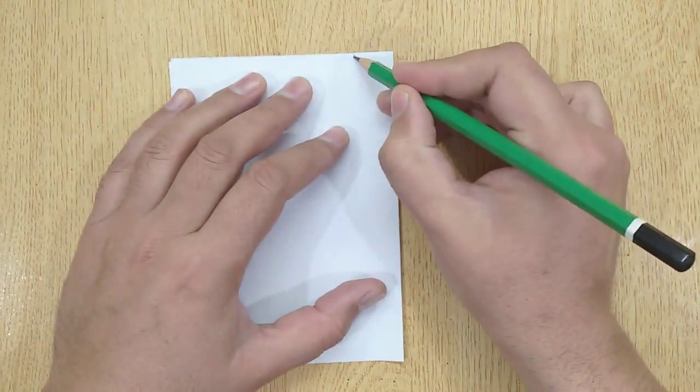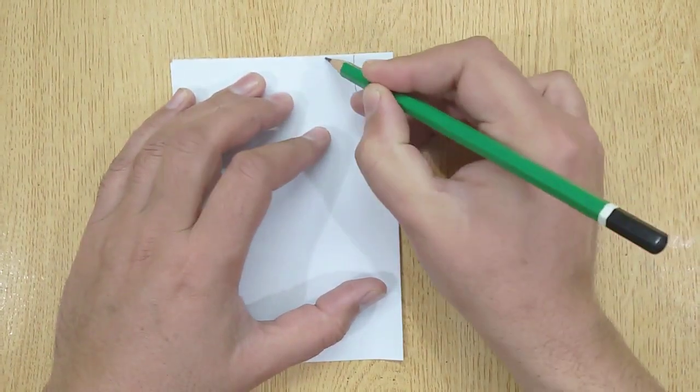First get a piece of paper and draw a slingshot design on it using a pencil.